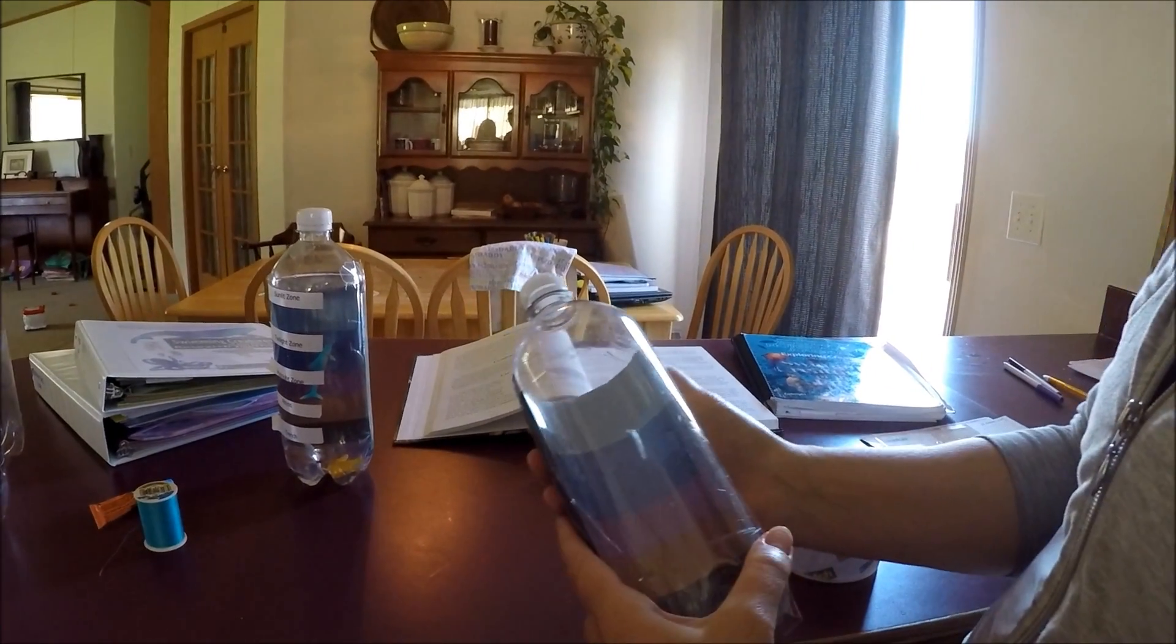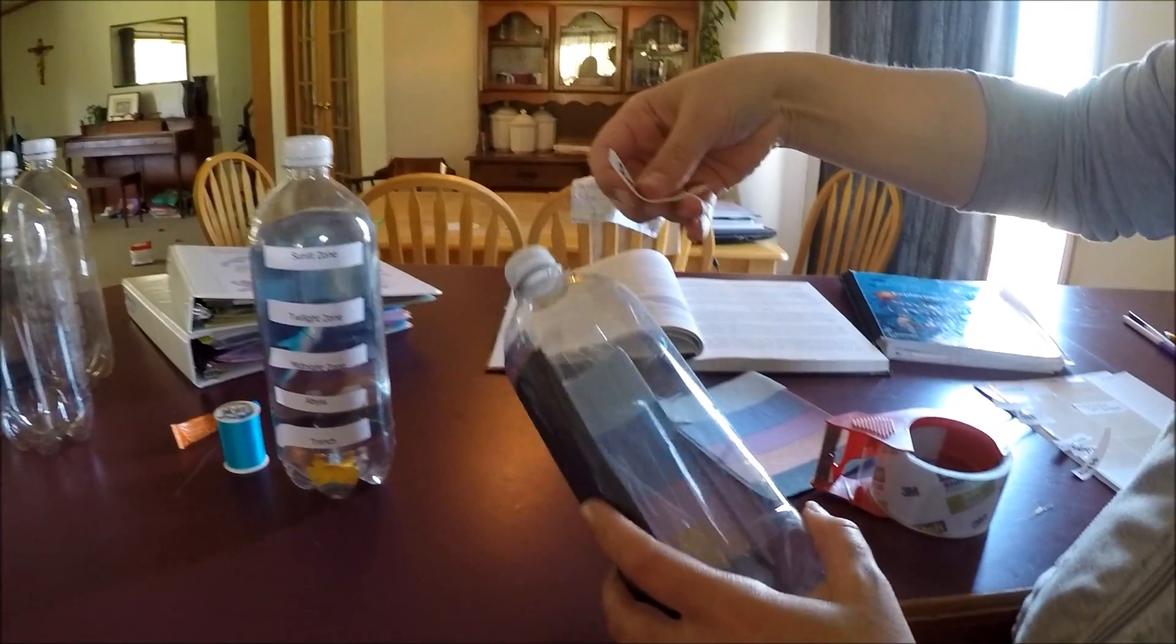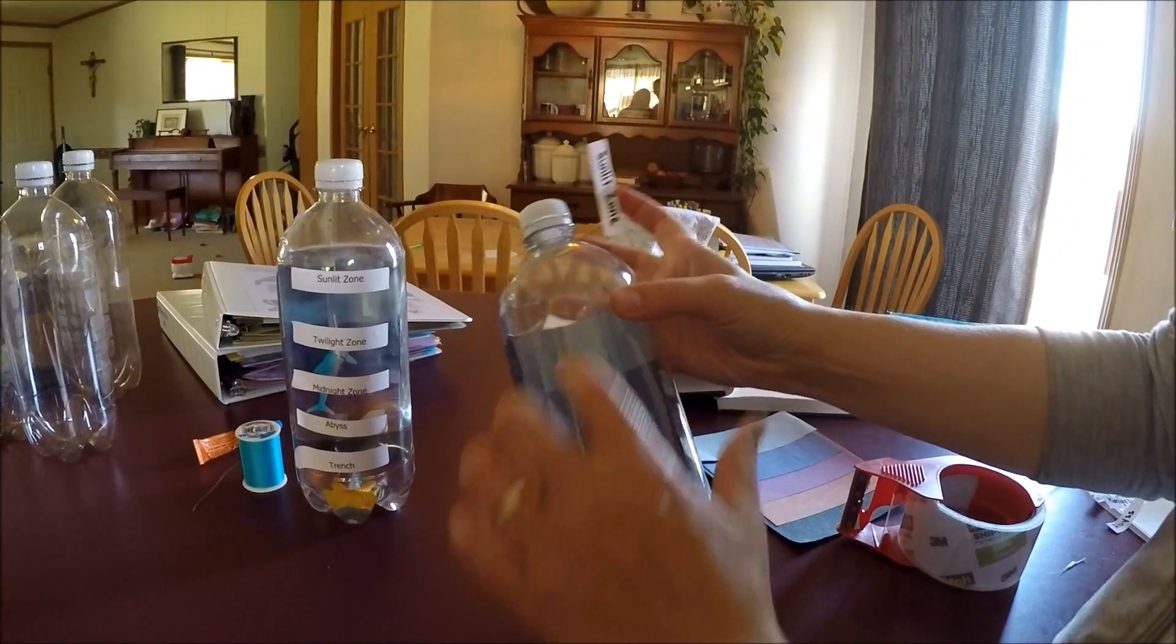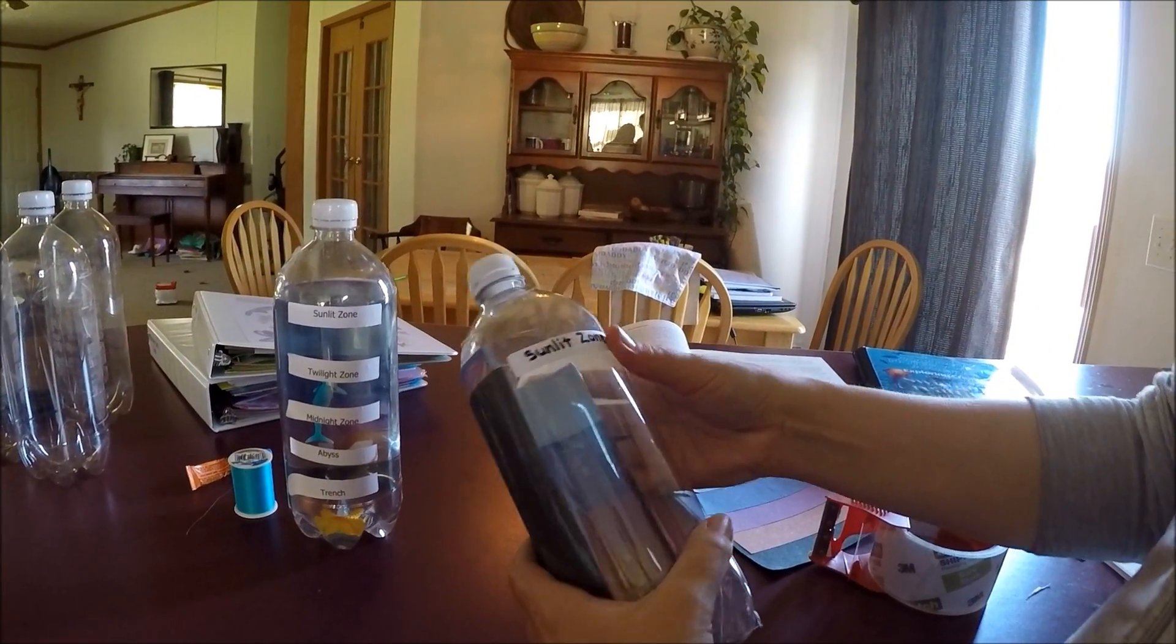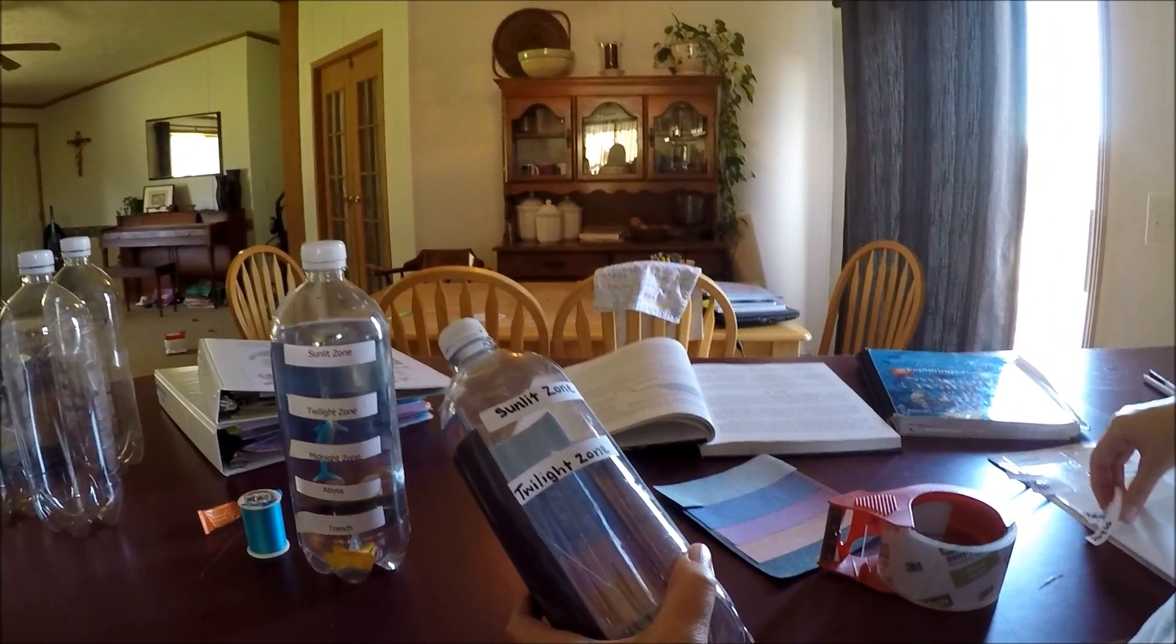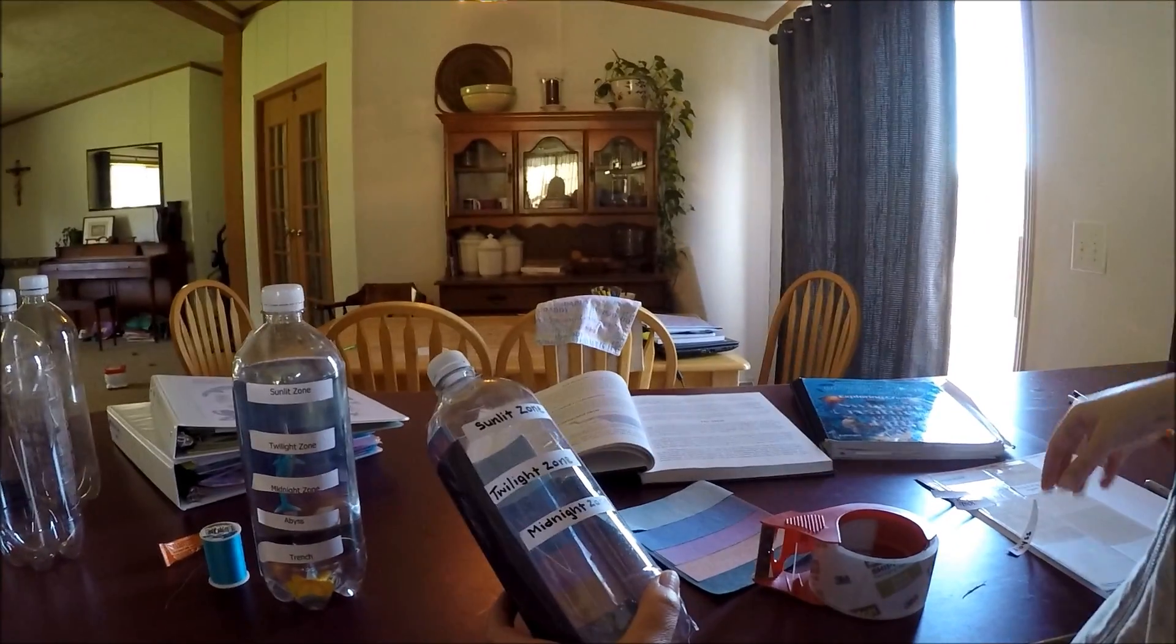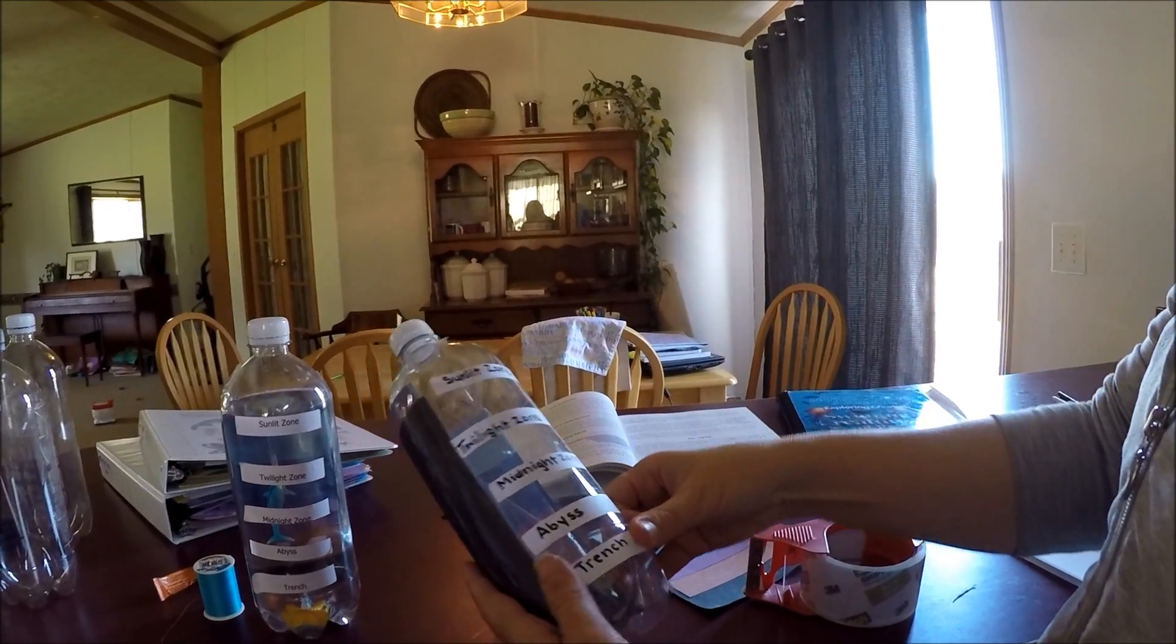The next step is putting the ocean zone stickers on. On this bottle I have them pre-printed, or you could have your children write them. I put them off to the side right where the zone is. The light blue is the sunlit zone, beneath that is the twilight zone in dark blue, the purple is the midnight zone, the brown is the abyss, and the black is the trench at the bottom of the ocean.